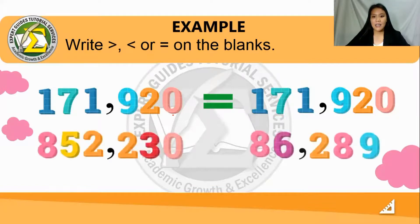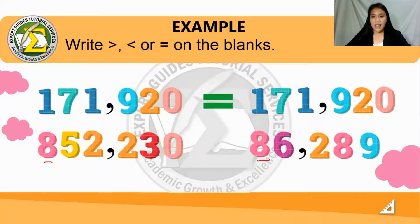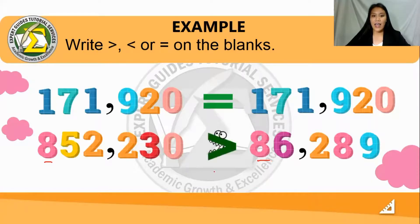Lastly, let's have this one. For our first rule, look at the place value of the highest digit. We have a hundred-thousands place value versus a ten-thousands place value. From that, we can clearly see which is greater — the hundred-thousands place value is greater than the ten-thousands place value. That gives us the answer: greater than.